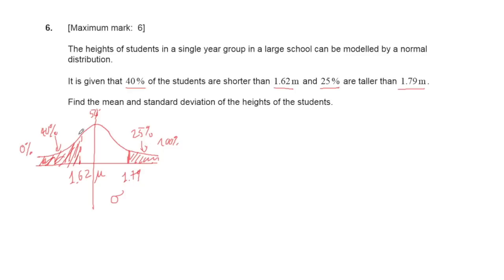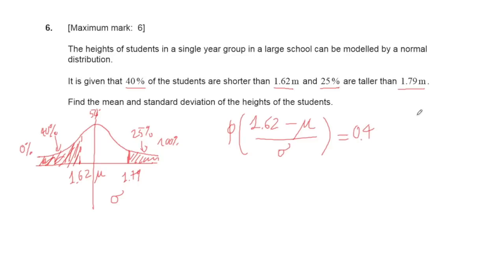Now let's use the formula to calculate. We have the cumulative normal distribution function. The Z-score is (1.62 − μ) / σ, and this equals 0.4, representing 40%. Using the inverse normal function on your calculator, you will find the value of (1.62 − μ) / σ.